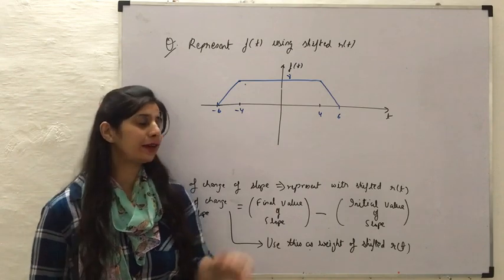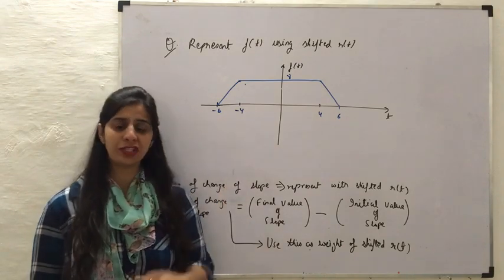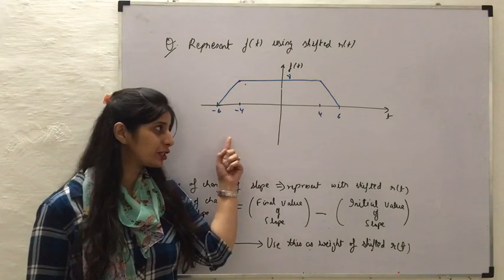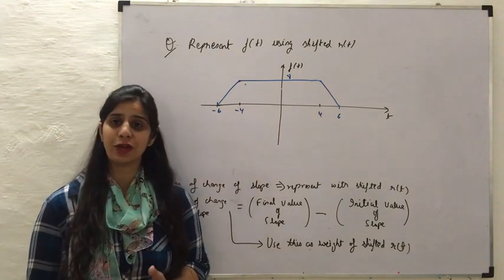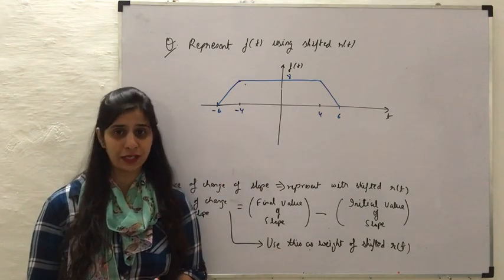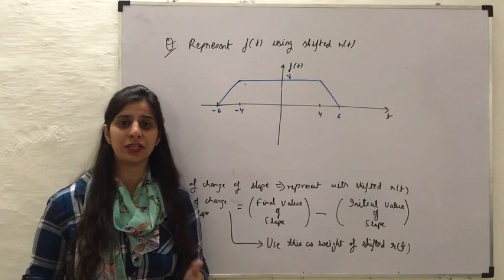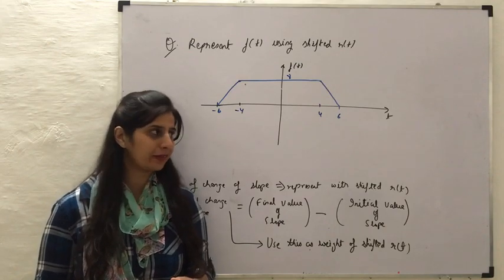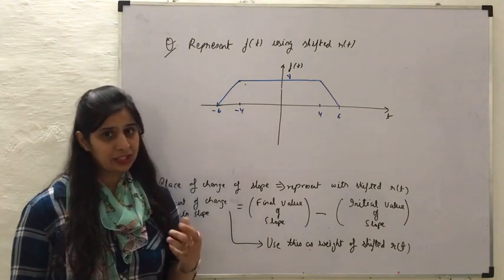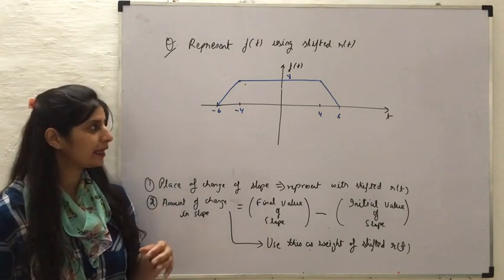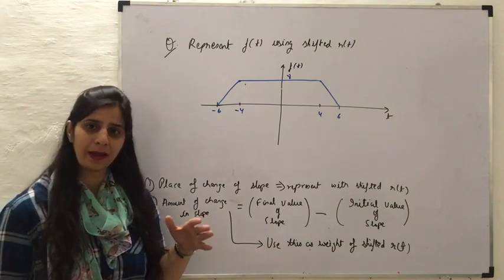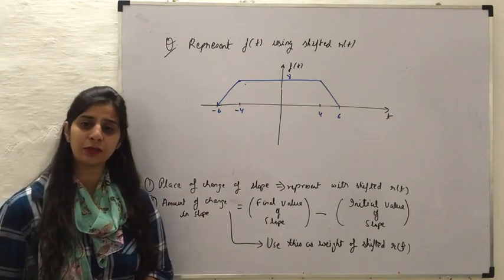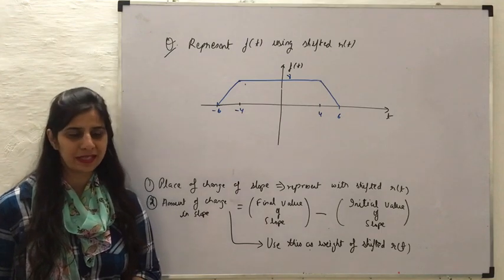For this kind of function, I can use a shifted ramp signal because this function does not consist of any sudden values of change — that means any step change occurring directly at one instant of time. The changes occurring here are taking some slope, and therefore to represent those slopes, we can use the ramp signal.